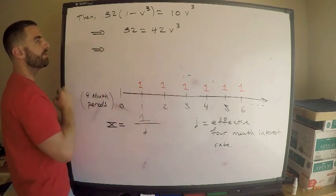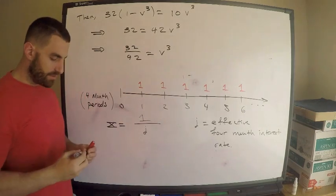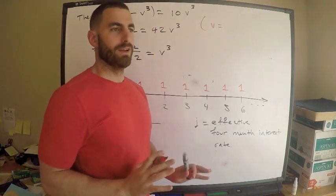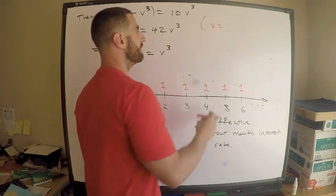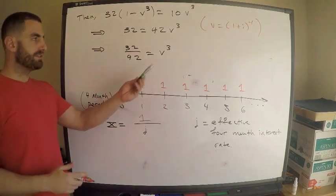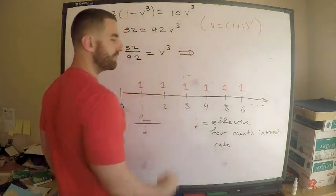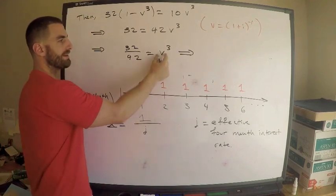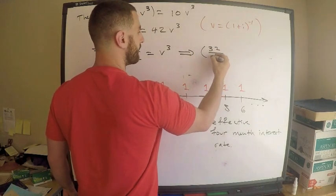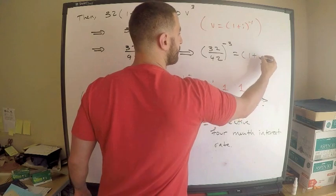This is now 32 over 42 equals V^3. For those of you who don't know, definition of V - this is one of a million, and I mean literally one of the million things you need to know for this test - is 1 plus i to the negative one. That's the definition. So i is implicitly given in V. What am I going to do here? Just use your algebra skills to say the following. This right-hand side is (1 plus i)^(-1), so this means 32 divided by 42 raised to the negative three equals 1 plus i.